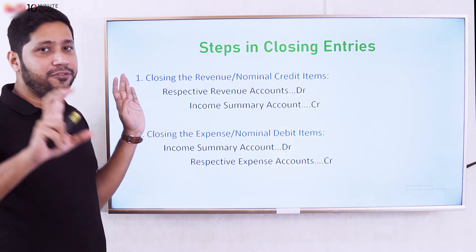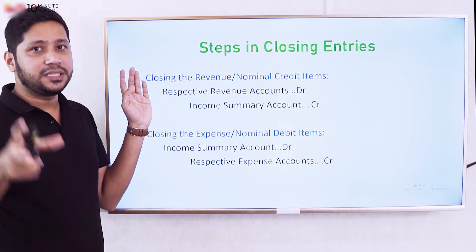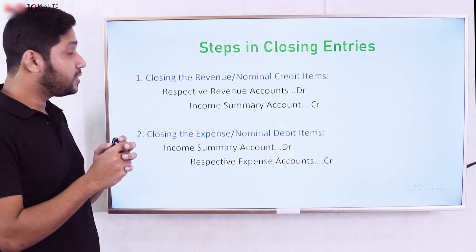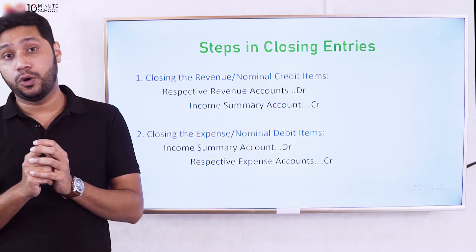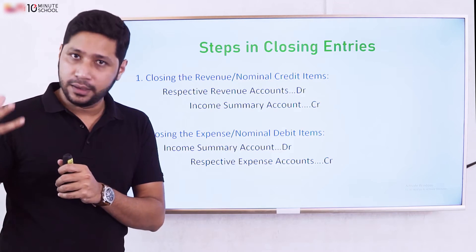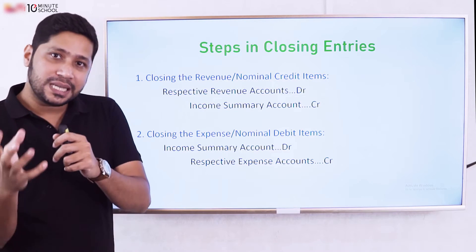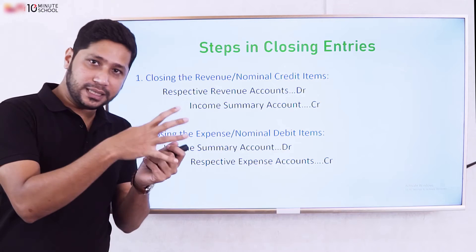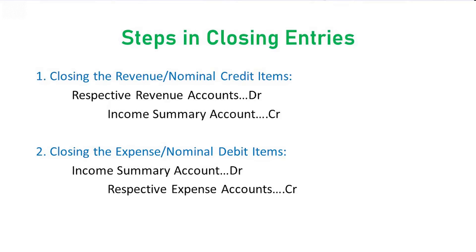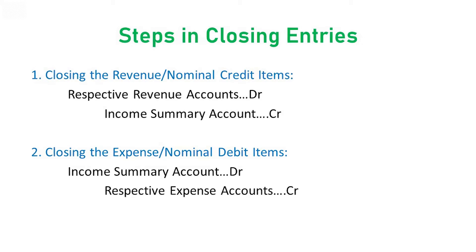The first step is to close the revenue items. Revenue is a credit item and a temporary account — also called a nominal account. Revenue items include vehicles, services, interest, rent, and so on. To close revenue, we debit all the revenue accounts.